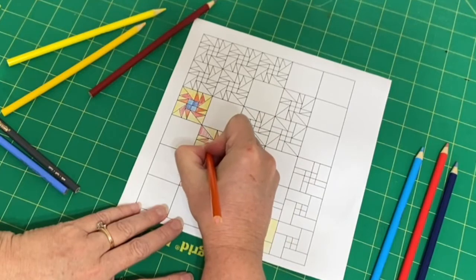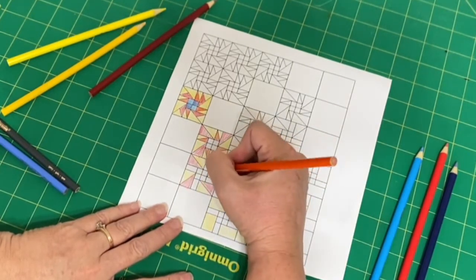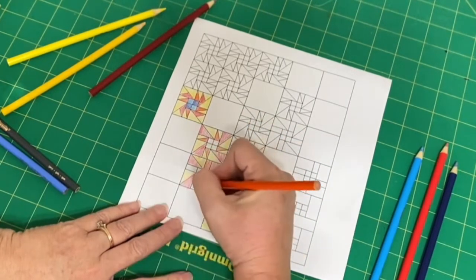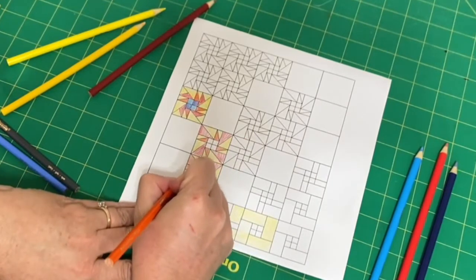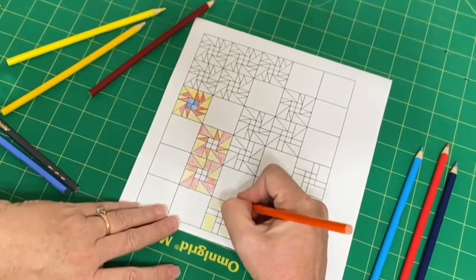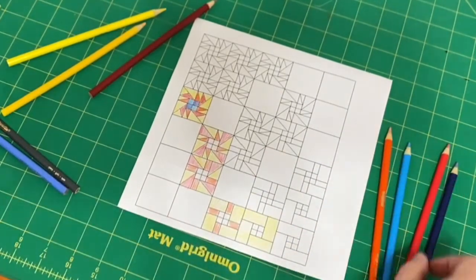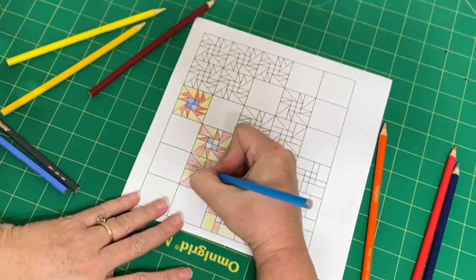Once you get the blocks colored in, you can go then through the pattern. And I would recommend either making notes in the margin or make a copy of the original pattern that you can mark up and put your new color selections in so that you know your colors next to each of the diagrams in the pattern.